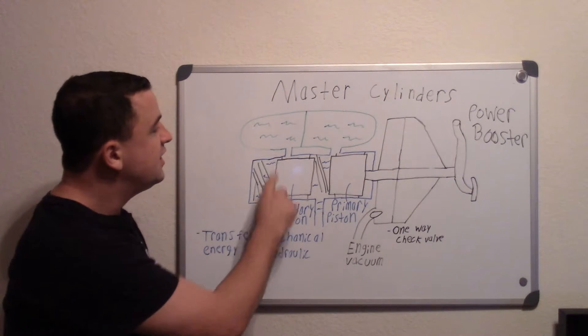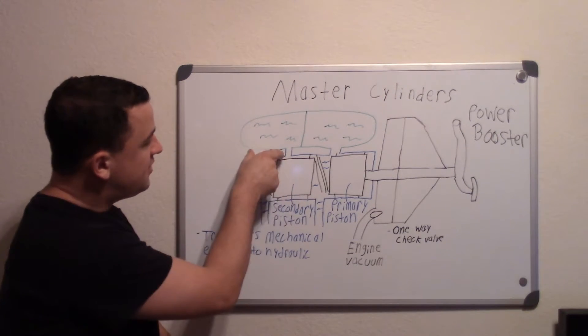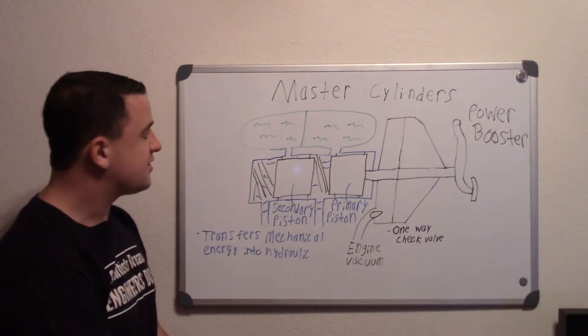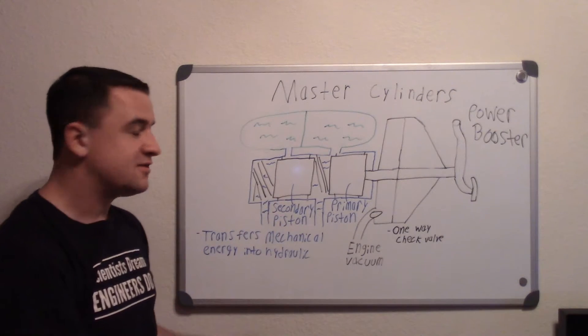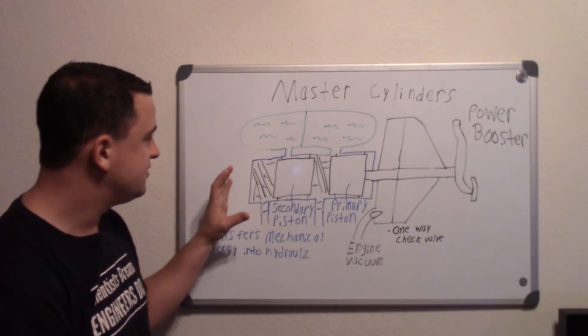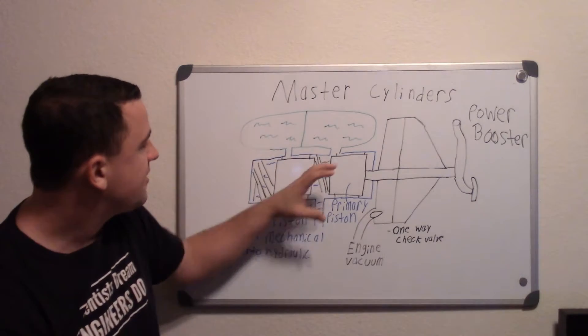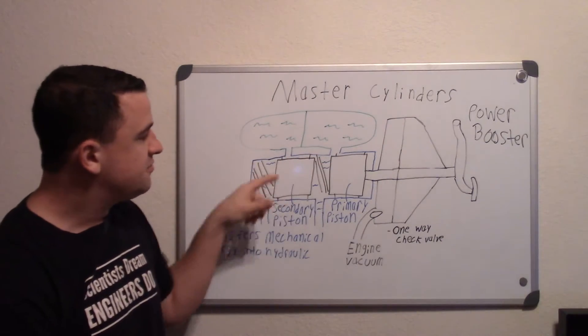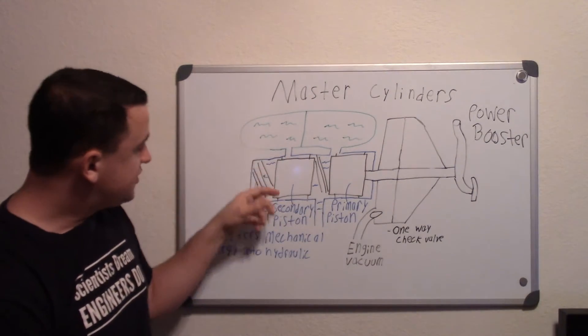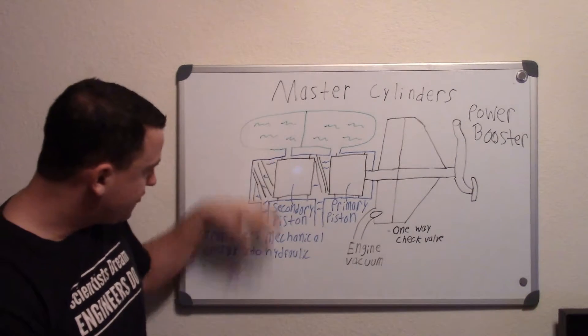So say this secondary piston here, you'll seal off this system and all this fluid will go this way through your brake lines. Because if you didn't have these seals, that fluid will just, you won't be pushing it, it'll just fight its way back. So these seals help these pistons push all that hydraulic fluid into one direction.